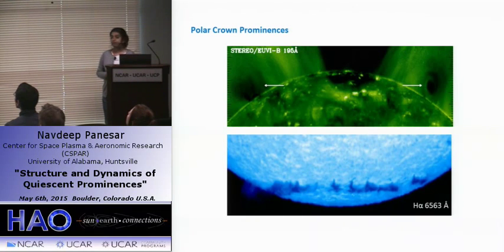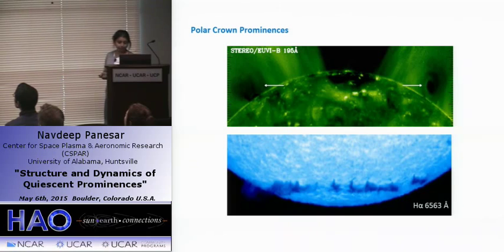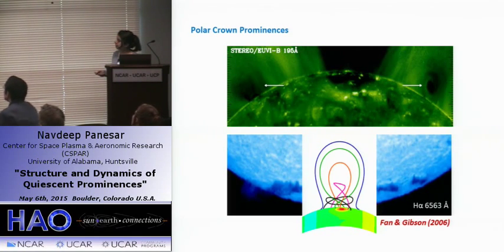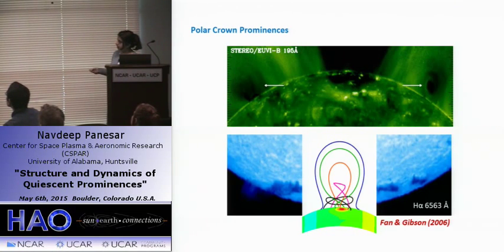Prominences are usually seen along coronal cavities. A coronal cavity is a region of low-density plasma above the prominence and below the coronal arc. Here we can see the coronal arc in blue, this helical black line is the prominence, and in between there is the coronal cavity.